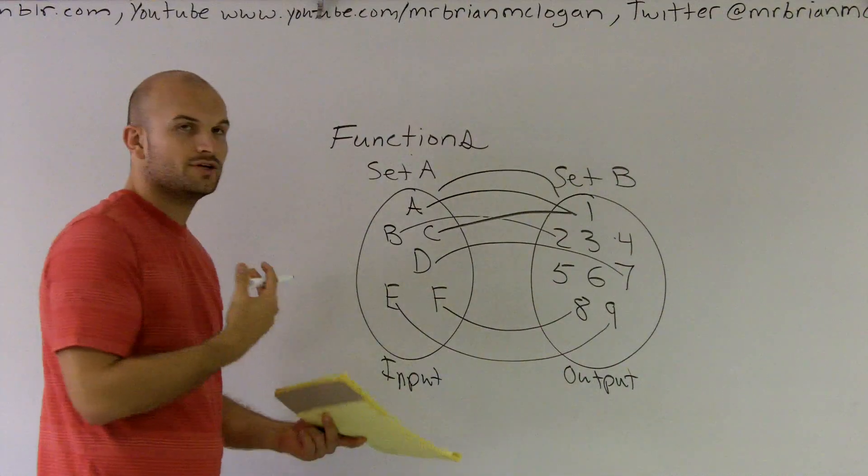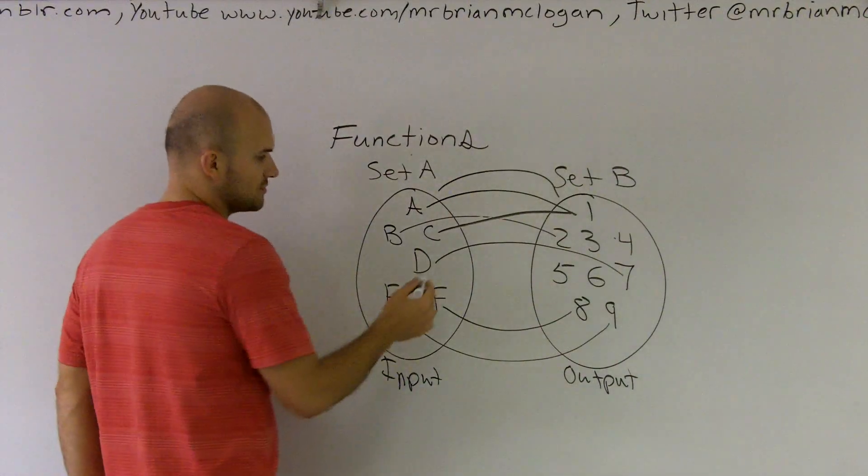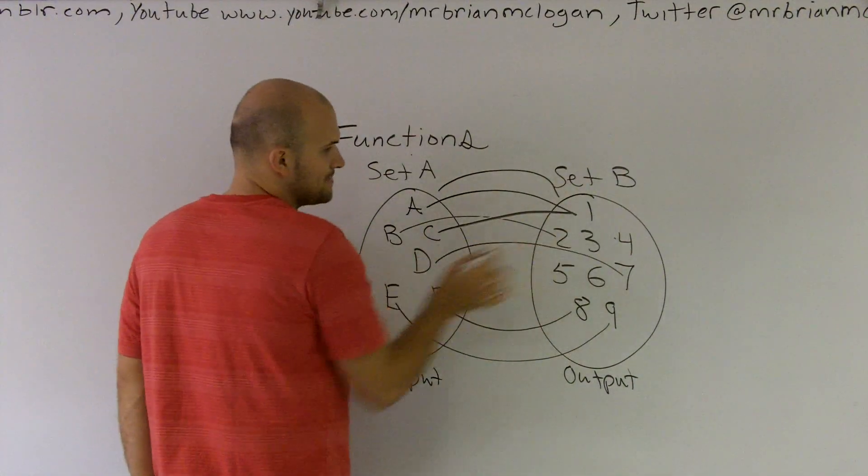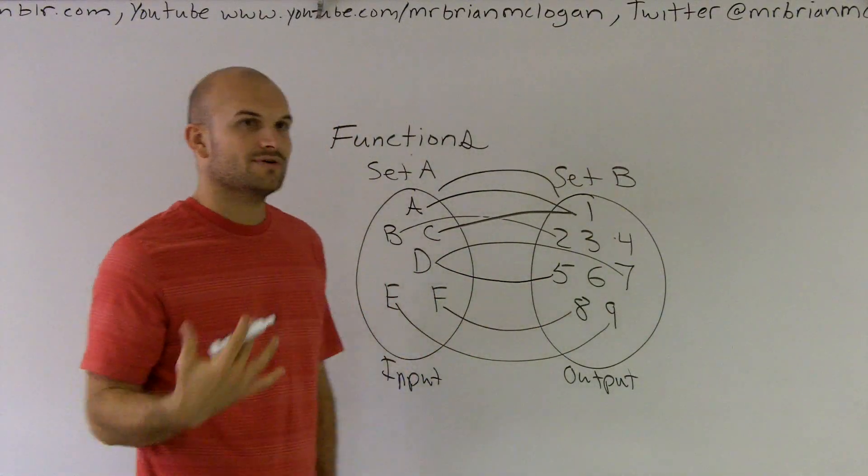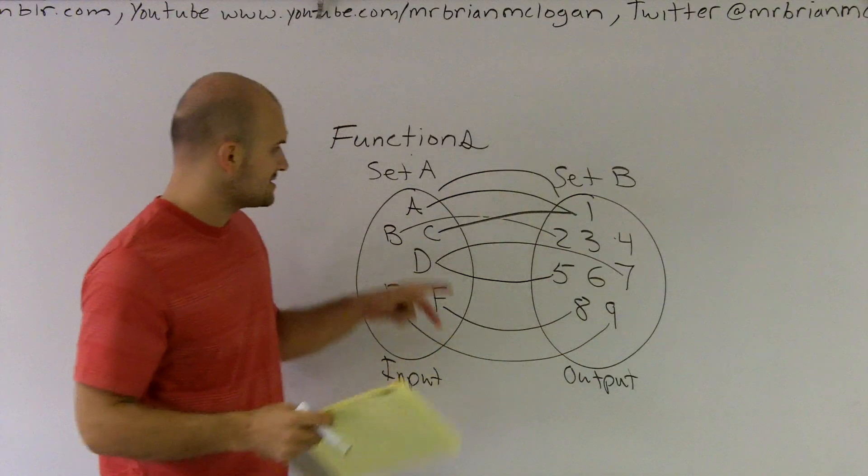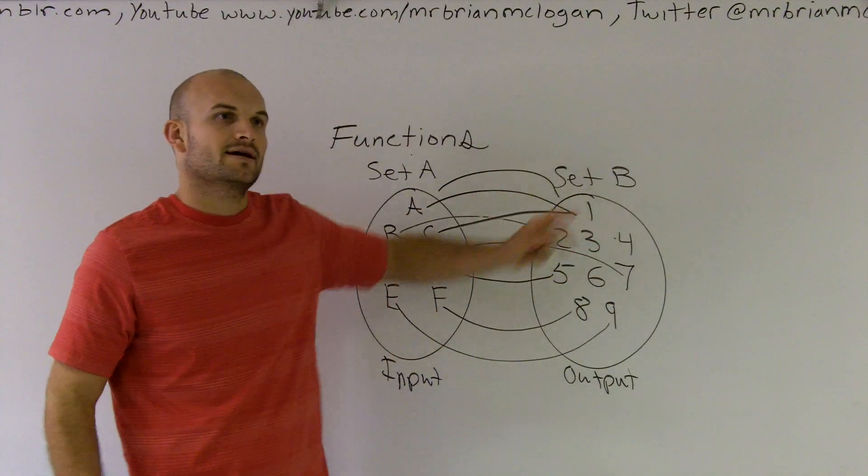Another case where you cannot have a function relationship is if D maps to 7 and D also maps to 5. I do not have a unique relationship because D maps to two different elements in the output set. If D is my input, I'm getting two different outputs.